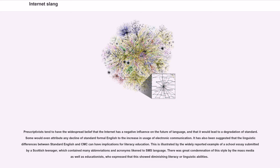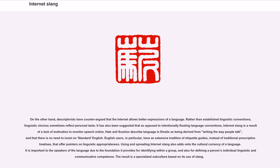It has been suggested that the linguistic differences between standard English and computer-mediated communication can have implications for literacy education. This is illustrated by the widely reported example of a school essay submitted by a Scottish teenager, which contained many abbreviations and acronyms likened to SMS language. There was great condemnation of this style by the mass media as well as educationists, who expressed that this showed diminishing literacy or linguistic abilities. On the other hand, descriptivists have counter-argued that the Internet allows better expressions of a language, and that linguistic choices sometimes reflect personal taste.